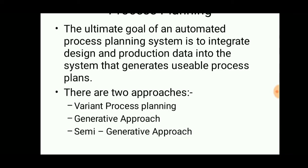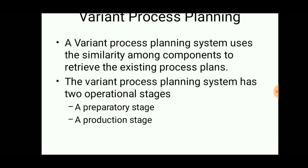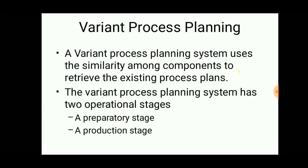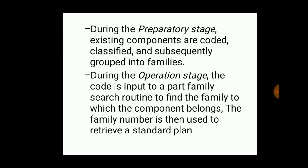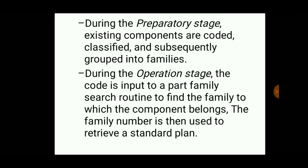The methods of computer aided process planning are: variant process planning, generative process planning, and the semi-generative approach. Variant process planning is a system that uses the similarity among components to retrieve existing process plans. It includes two stages: a preparatory stage and a production stage.